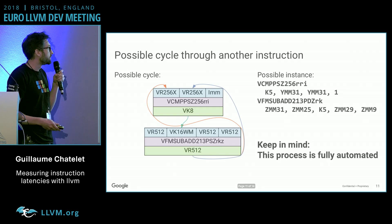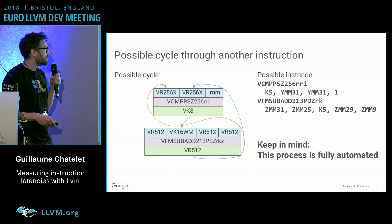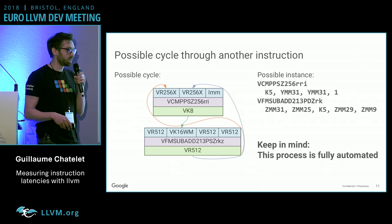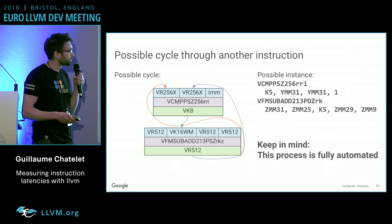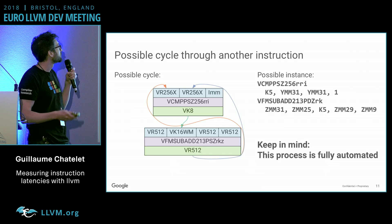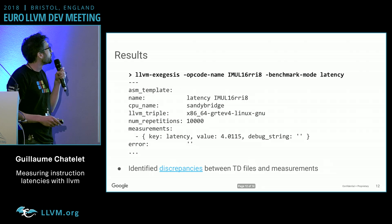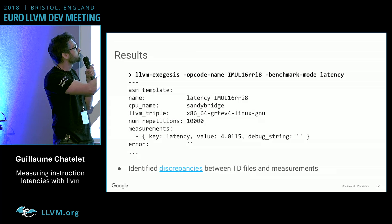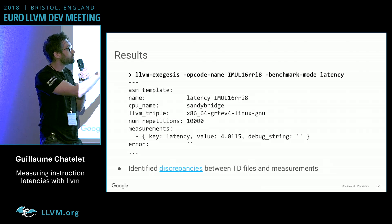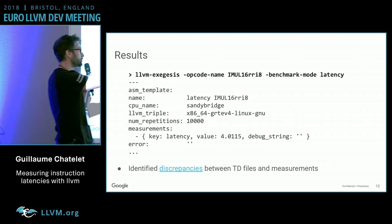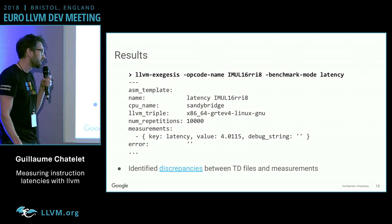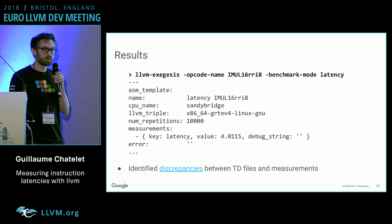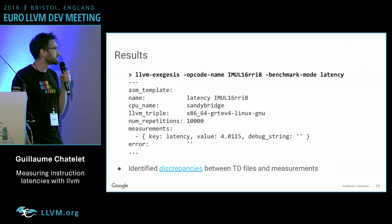You can do this with more complex instructions as well. Keep in mind that this is a fully automated process — it's going to be randomized, picking different instructions, trying different things, and measuring different things. As for the results: you just call this tool with the instruction and ask for latency, and it gives you the measured latency. With this tool, we identified a few discrepancies between the TD files and what's in the manual, so we can actually fix them.